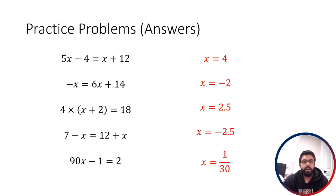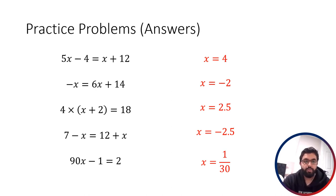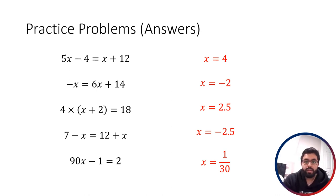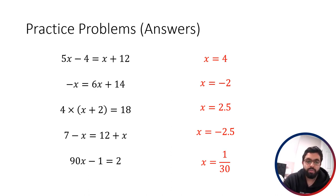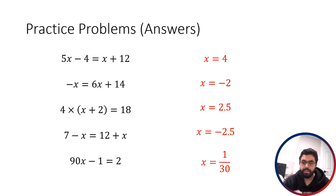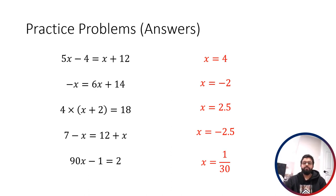Here are the answers to those practice questions. We've got x = 4 for the first one, x = -2 for the second one, x = 2.5 or 5/2 for the third one, x = -2.5 for the fourth one, and x = 1/30 for the fifth one. If you wrote your answers as fractions instead of decimals or vice versa, that's okay — I just picked whatever made the most sense.